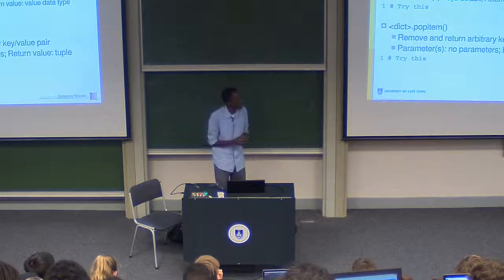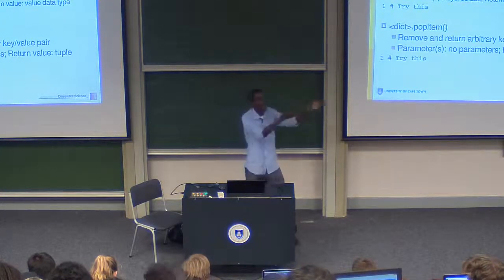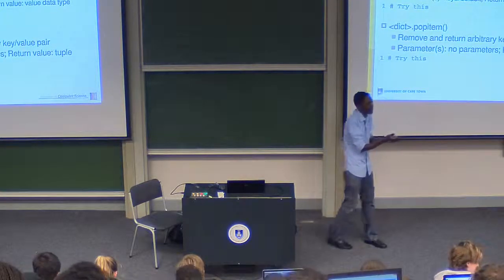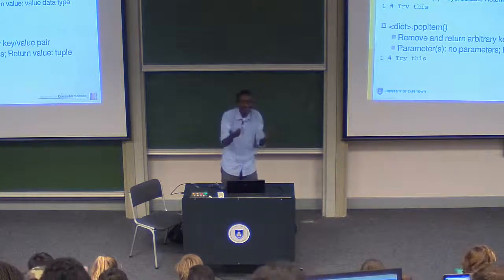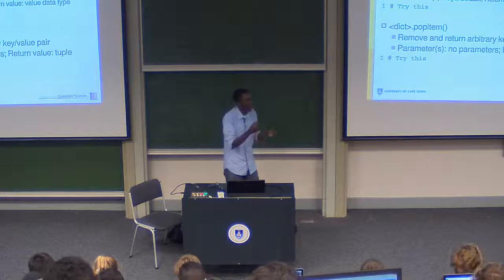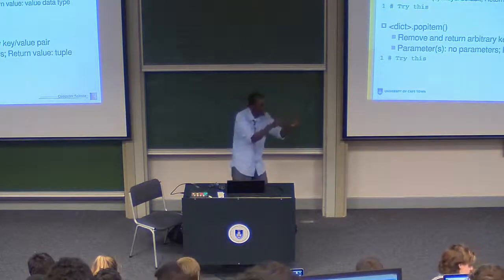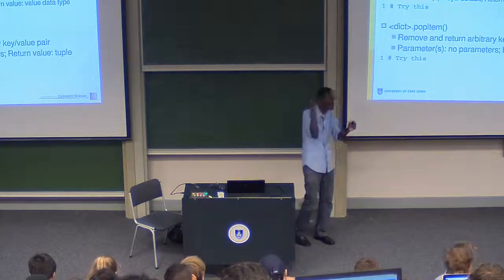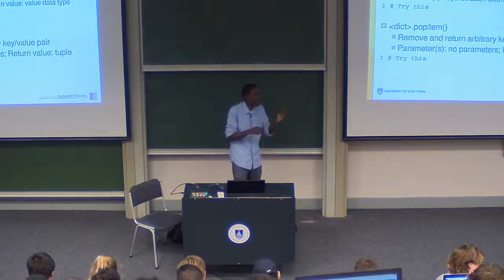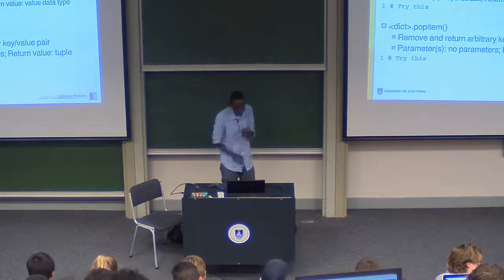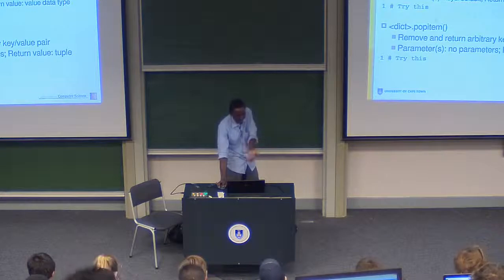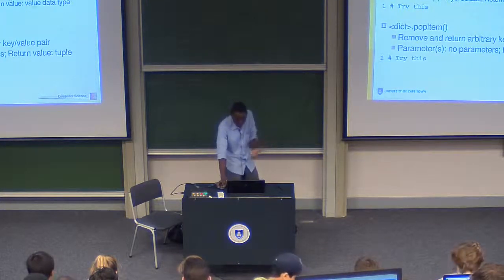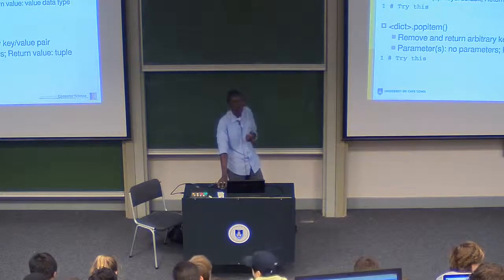We remember pop() — we had it in the list class, where it returns the last item in the list and removes it, modifying the list. It's always a good idea to create shallow copies using the copy() function before popping. In the dictionary class, pop() also has a default value — it returns the value and the value data type. I'm not sure what the default value does here — you should look it up.